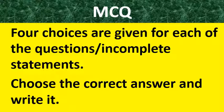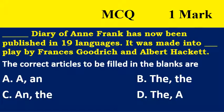So you have 20 marks of questions. First of all, MCQ. The first one is an MCQ question related to articles. 'Dash diary of Anne Frank has now been published in 19 languages. It was made into dash — it was made into dash play by Francis Goodrich and Albert Hackett.' The correct articles to be filled in the blanks are: Option A — a, and; Option B — the, the; Option C — and; Option D — the, a. Choose the correct one. I'll give the correct answer after presenting the question paper.